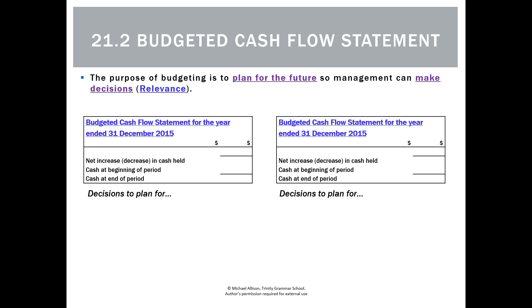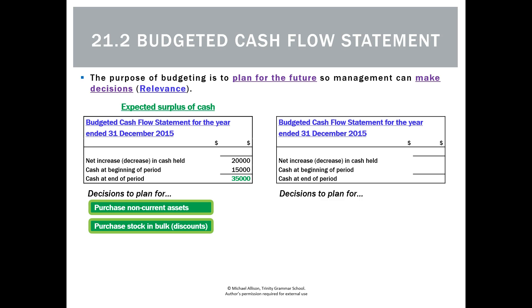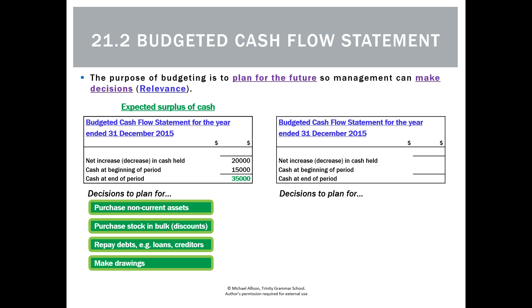The whole point of budgeting is not to have certainty about the future, but to anticipate likely events and make future plans and decisions. For example, if our budgeted cash flow statement shows we'll have a surplus final bank balance of $35,000, we can plan to buy more non-current assets, purchase stock in bulk to get discounts, repay some debts early, and make drawings for ourselves — as long as everything is in proportion.